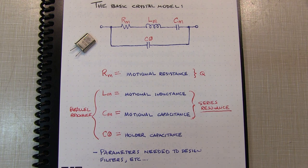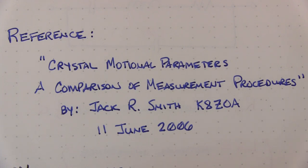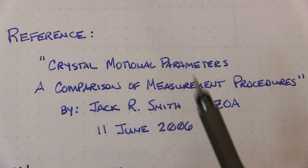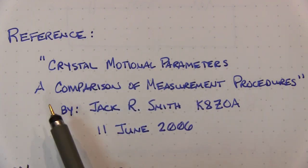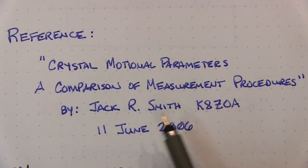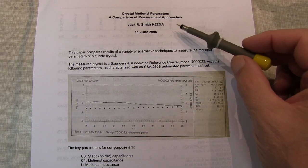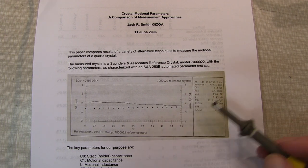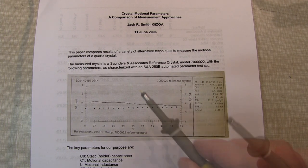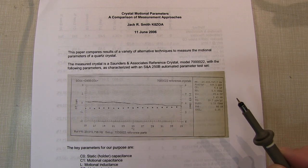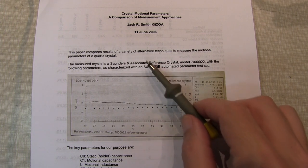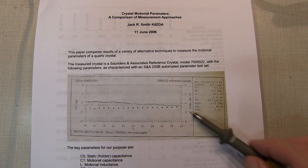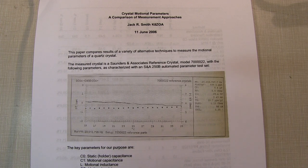So in this video, we're going to take a look at how to measure those parameters. My reference for making this video is a paper called "Crystal Motional Parameters: A Comparison of Measurement Procedures," written by Jack Smith, K8ZOA. In this paper, Mr. Smith uses a reference crystal that's very precisely characterized for all of its motional properties, and compares more than a dozen different measurement techniques to see how close each of them comes to the actual value for that crystal.